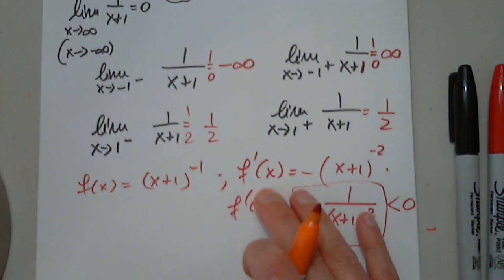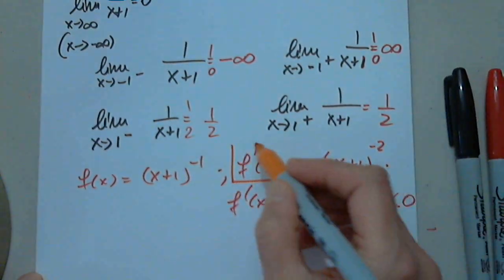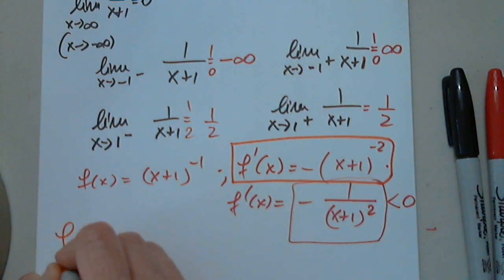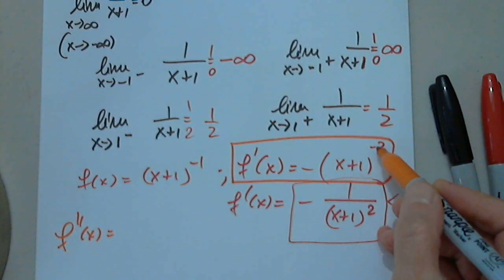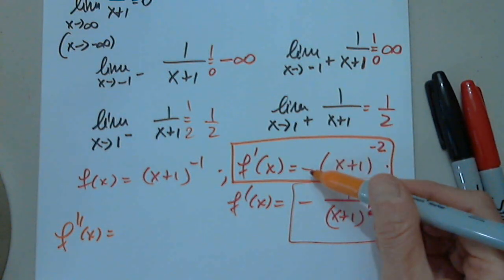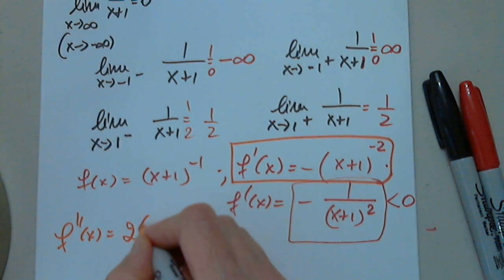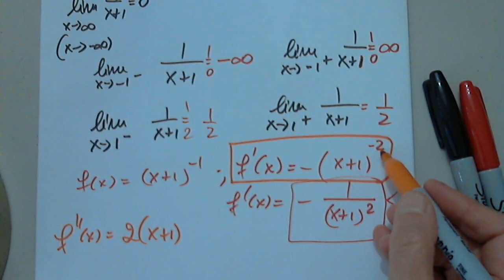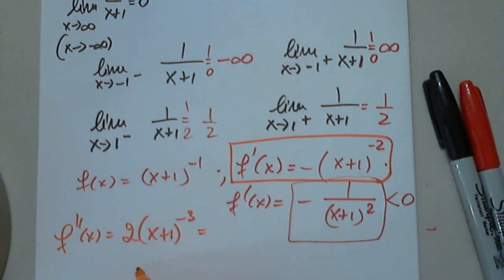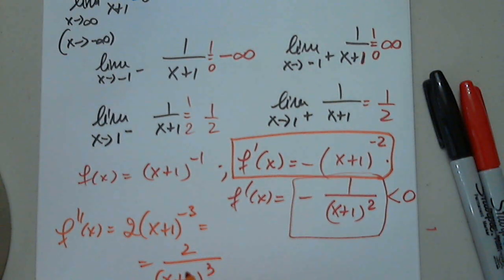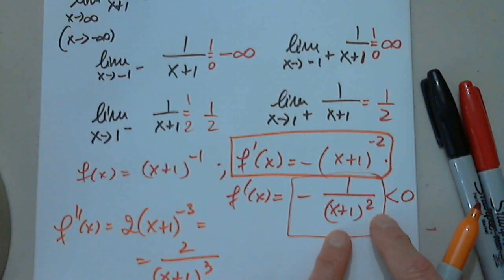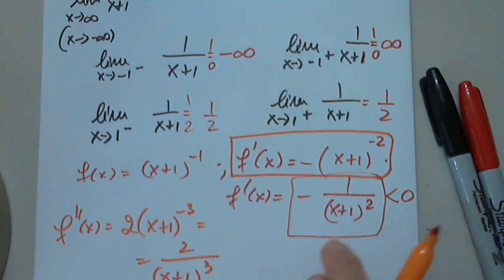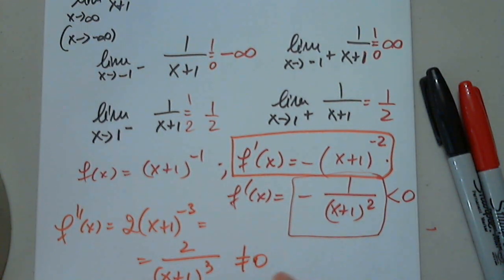And I want to use this to determine the second derivative. Can anyone differentiate this for us? 2 times x plus 1 to the negative third times the inner function prime, which is 1. Perfect. So this is 2 over x plus 1 cubed. Notice that I cannot say about x plus 1 cubed what I said about x plus 1 squared. It would not be true. x plus 1 squared is always positive, but x plus 1 cubed is not. So although this is never zero, it could be positive or negative.